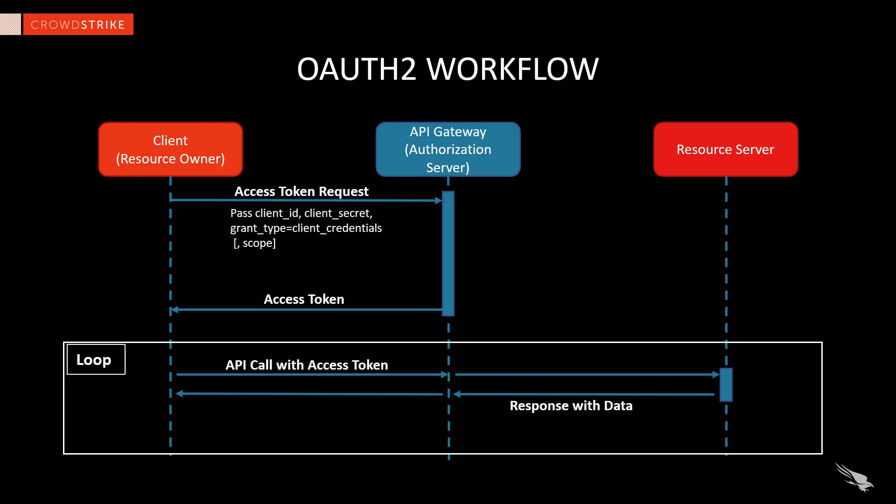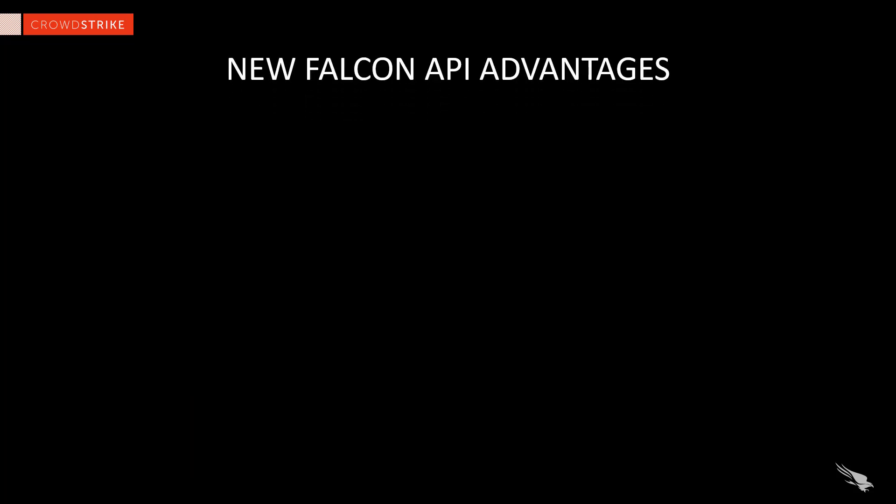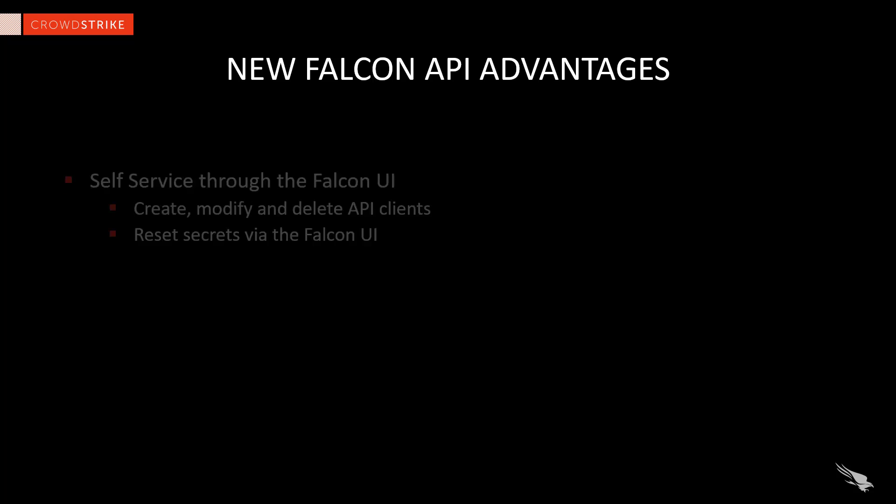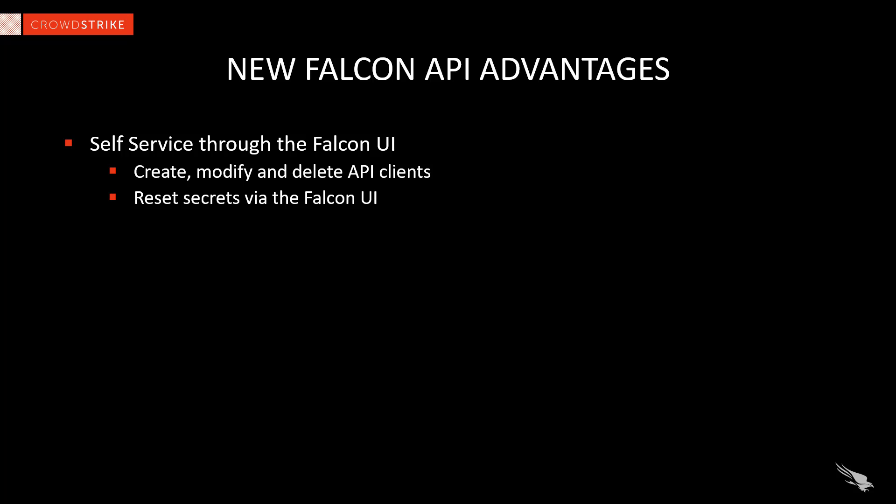Now that we have seen how OAuth 2 works, what are the advantages for CrowdStrike customers? First, this development provides a method for self-service functionality. Customers can now create, modify, or delete API clients directly in the Falcon UI. They no longer have to contact and work with CrowdStrike support to provision new API access. At the same time, the self-service interface also gives customers a way to reset secrets as needed.